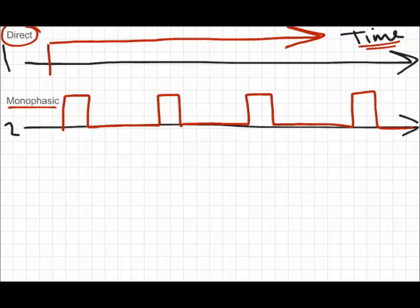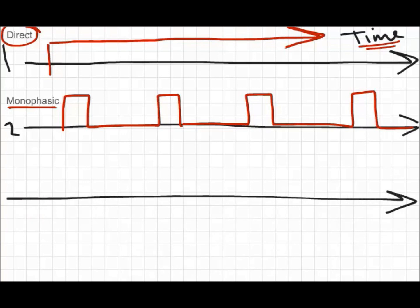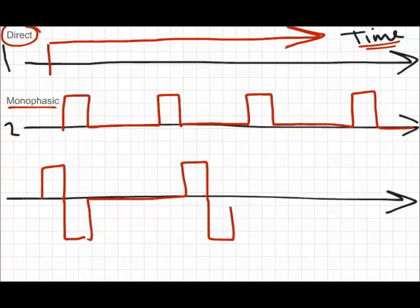The next waveform is called biphasic. As the name implies, it has two opposite phases. It has a single phase in one direction, then the electric current reverses and goes in the opposite direction, dies down, goes up in the opposite direction, dies down, and so forth. That's what is called biphasic.